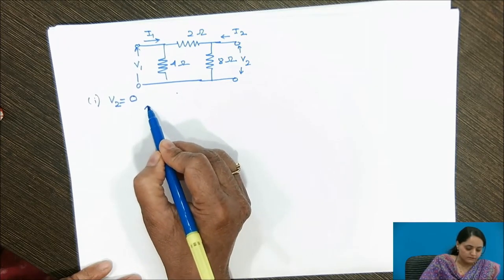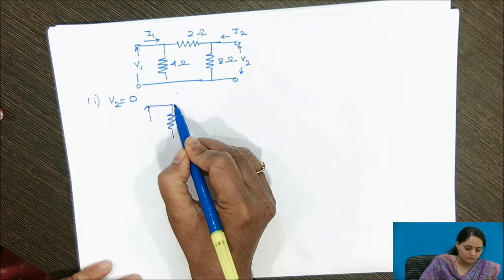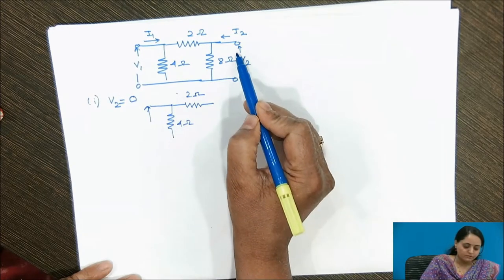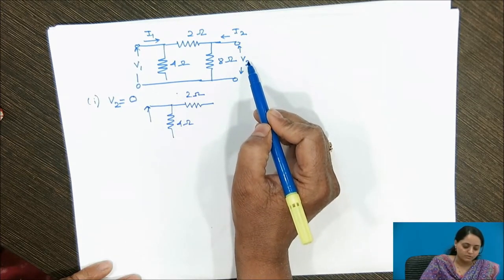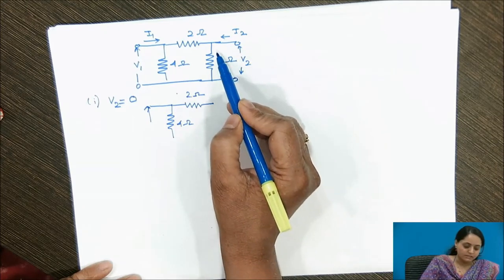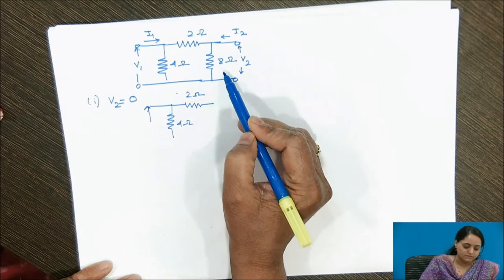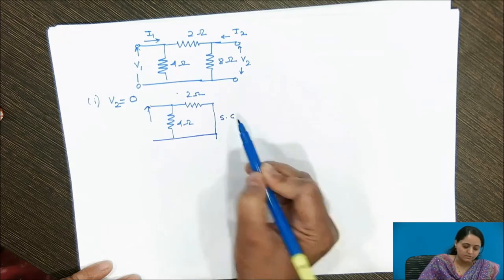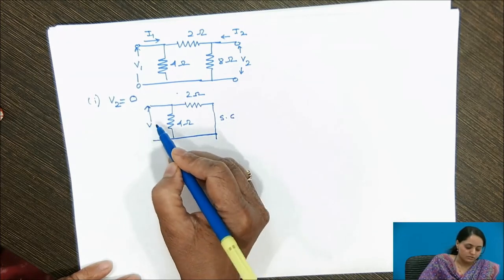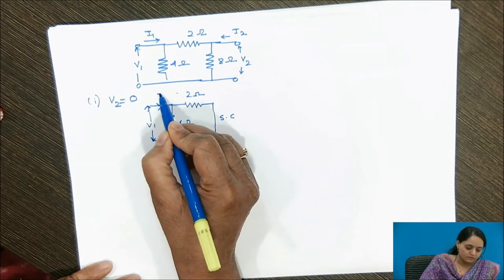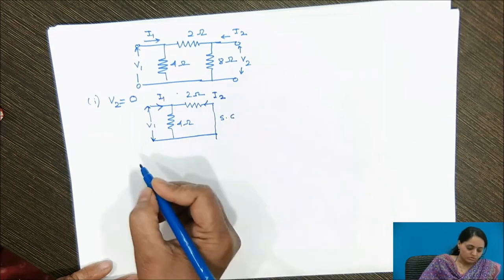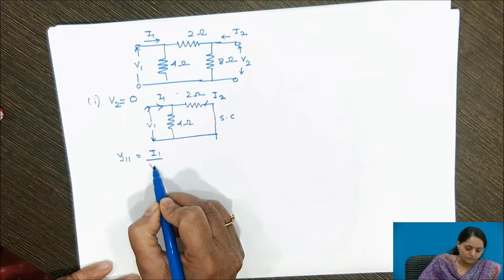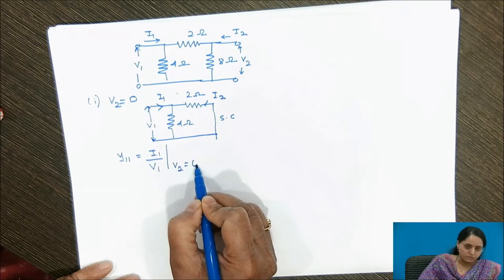Let us redraw the given circuit. When port voltage V2 is made equal to zero, the second port is short-circuited. In this case, the 8-ohm resistance can be neglected, as there is a branch in parallel with it representing a short circuit — that is, a resistance equal to zero. Y11 is then calculated as the ratio of I1 to V1 when V2 equals zero.